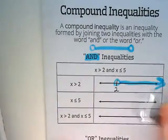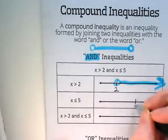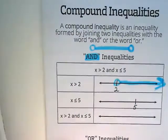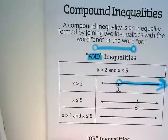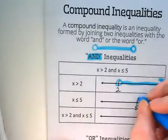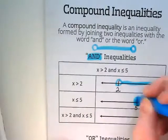X is less than or equal to 5, so we're going to put a 5 on here. Open or closed circle? Closed. Closed, and it goes to the left.